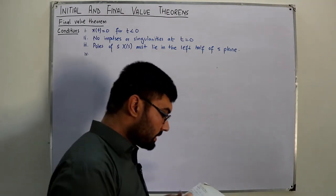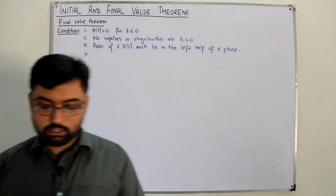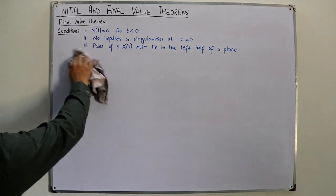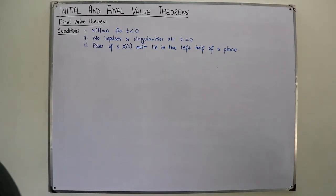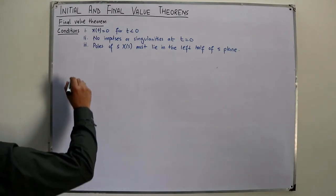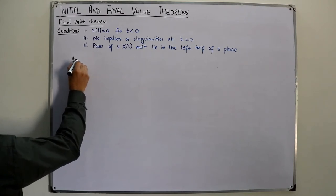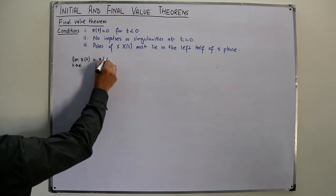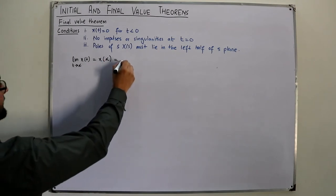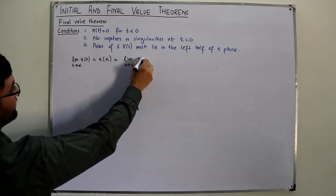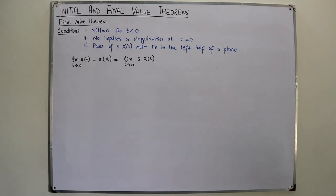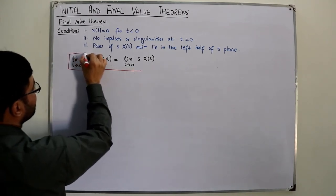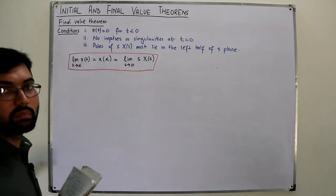The final value theorem states that if you have a signal x(t) and you approach t to infinity — meaning you want the value at t equal to infinity — then you take the limit as s approaches zero of s times X(s). That gives you the value of the signal at t equal to infinity. This is what the final value theorem is.